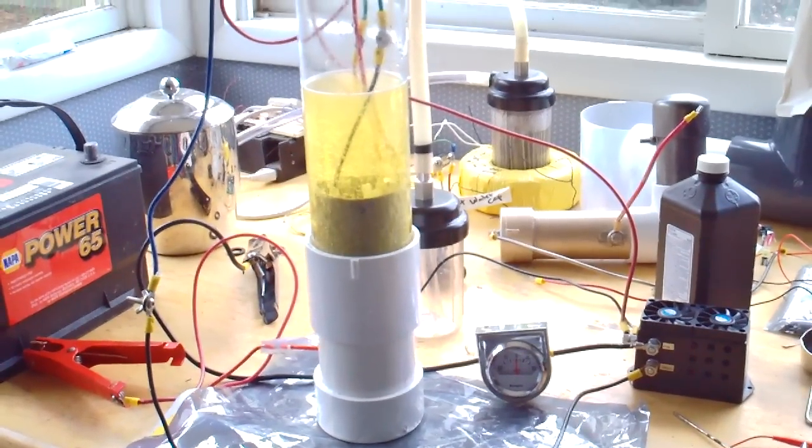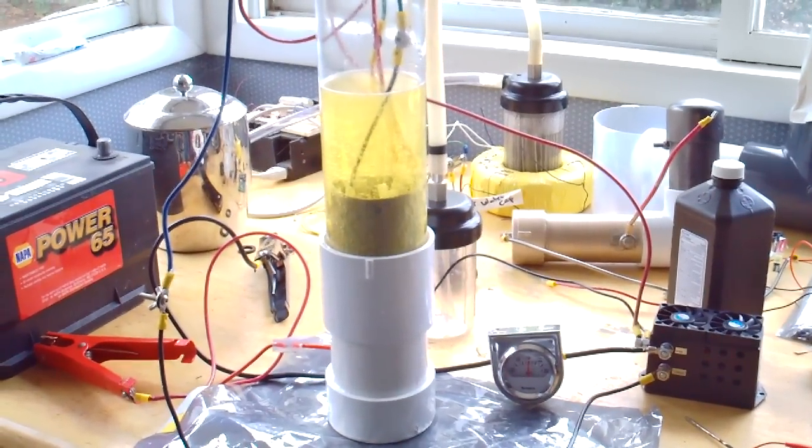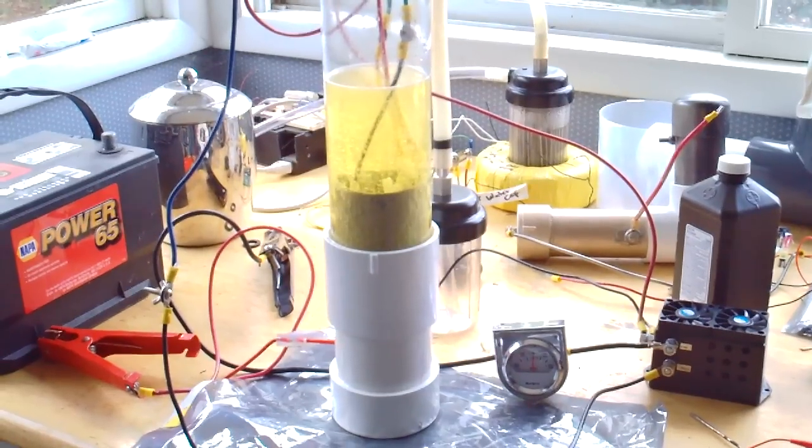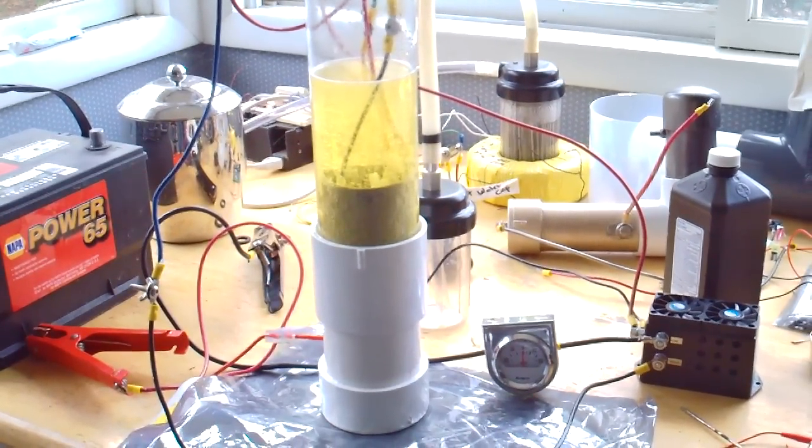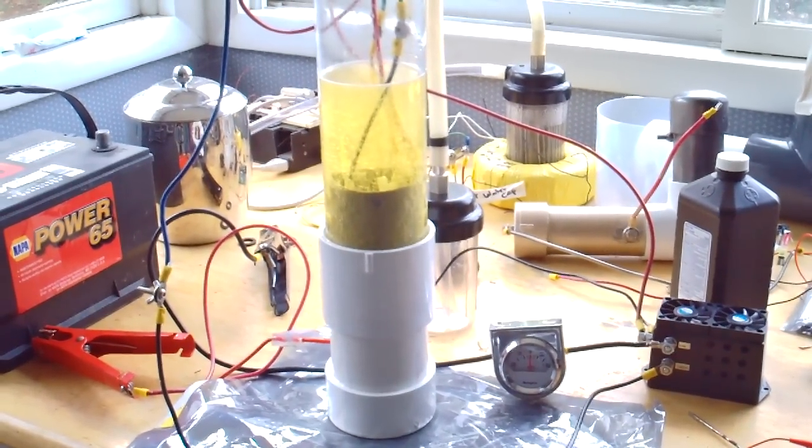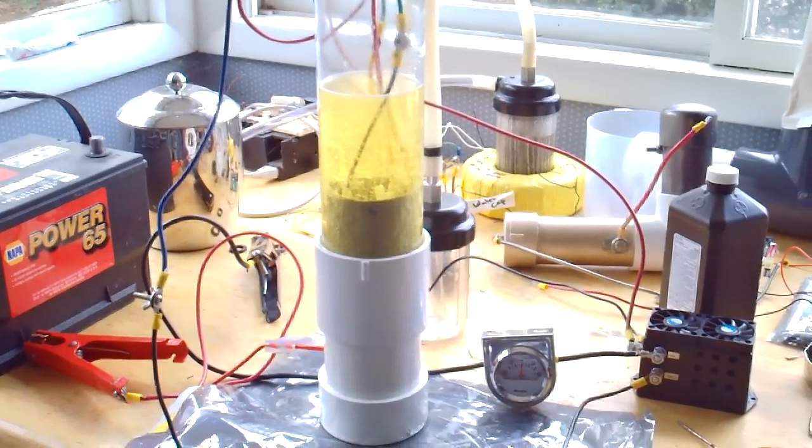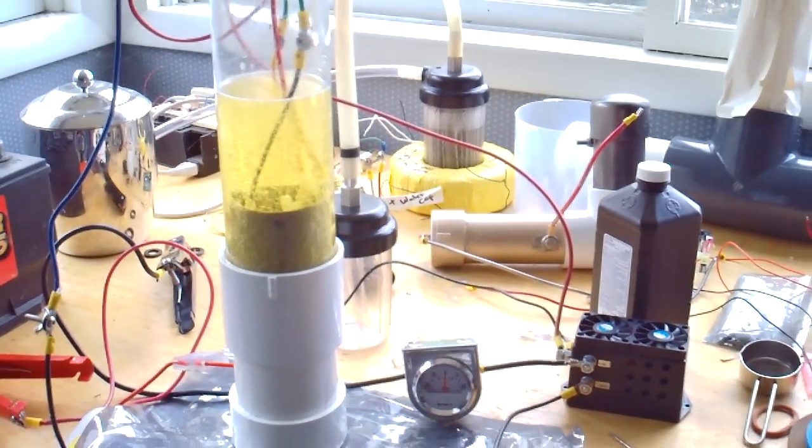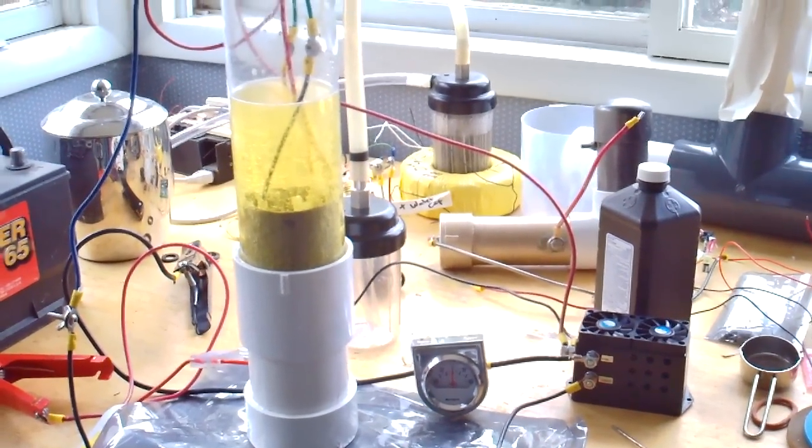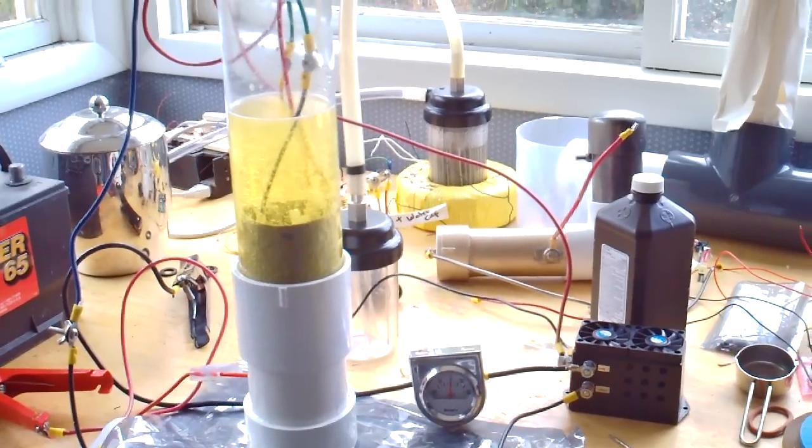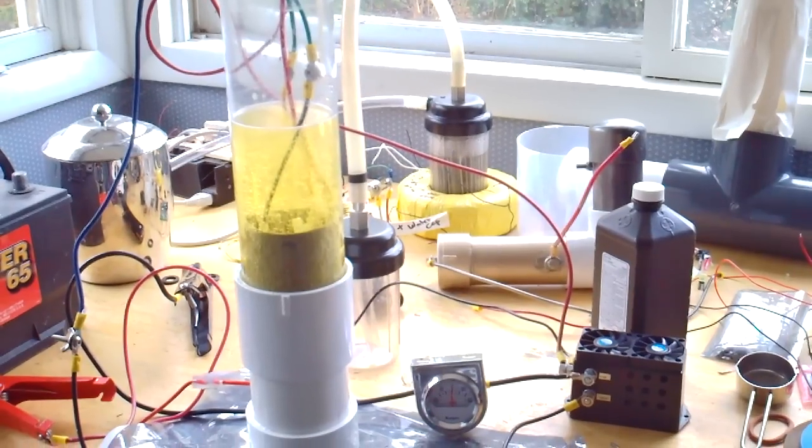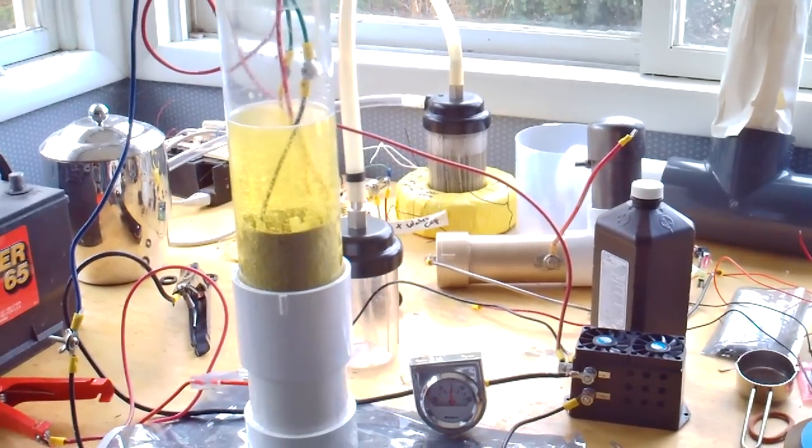What we're doing today, I'm using the exact same electrolyte as we used in our previous tests for the Vortex. Instead of using the Vortex cell, I'm using the Big Kahuna cell. It's actually a three-cell unit with two positives and a negative in the center.